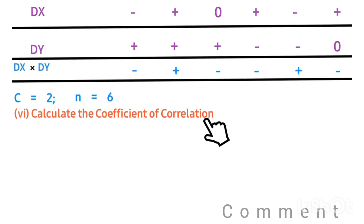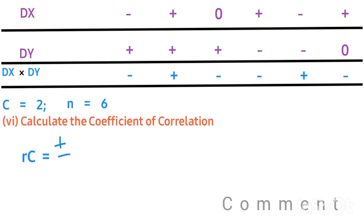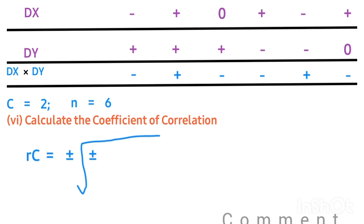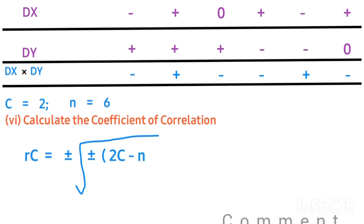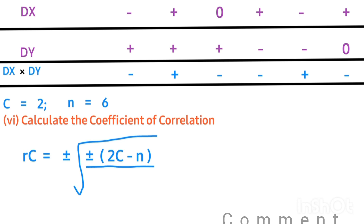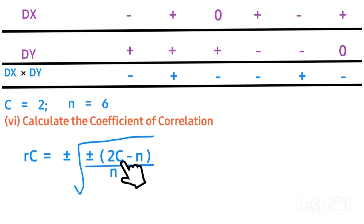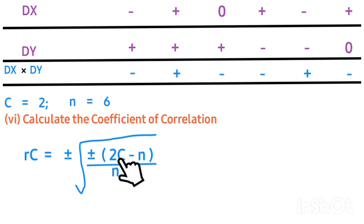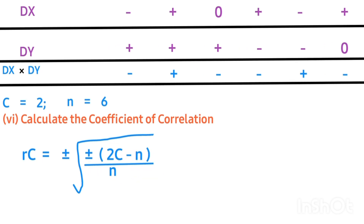The last step says: calculate the coefficient of correlation using the concurrent deviation method formula: rc equals the square root of plus or minus, open bracket, 2C minus n, close bracket, over n. Here rc stands for the coefficient of correlation by concurrent deviation method, C equals 2, and n equals 6. The plus or minus sign to use will be determined by the value of 2C minus n.